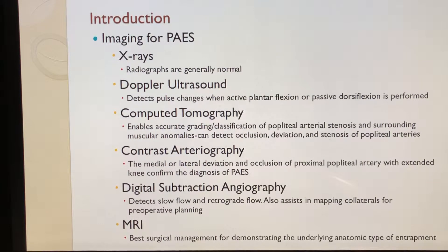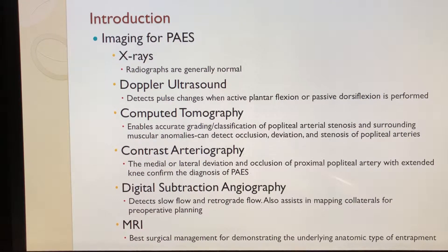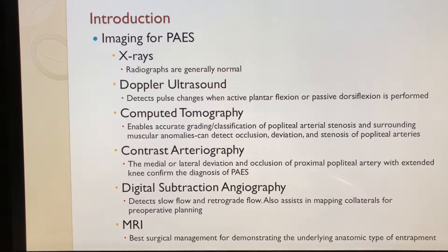Imaging of choice for PAES includes x-rays, which are generally negative; color Doppler ultrasound, which provides the best preliminary findings; CT, which allows grading or classification of PAES; arteriography with contrast, which provides diagnosis confirmation if needed; subtraction angiography, which allows for mapping of collaterals for surgery; and MRI, which is best used for surgical management and showing the type of entrapment condition.